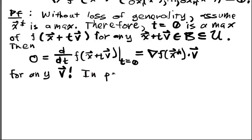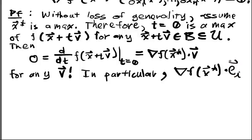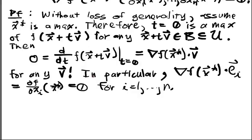the gradient of f(x*) dotted with ei equals ∂f/∂xi at x*, which equals zero by this observation. And this is for i=1 up to n. And therefore, I know that all of my components of the gradient vanish. And we're done.